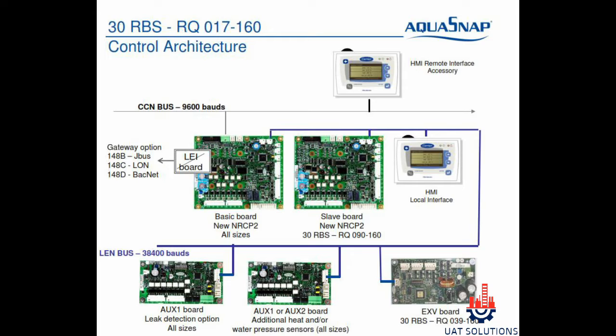Electronic modules used for this chiller are as shown. NRCP2 module is the main processor board and it can control two compressors in one circuit. If there are two circuits or compressors more than two, then another NRCP2 module is installed as a slave board.